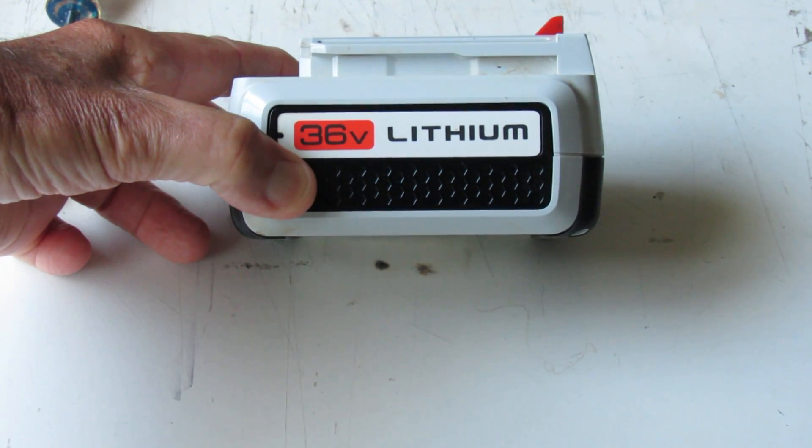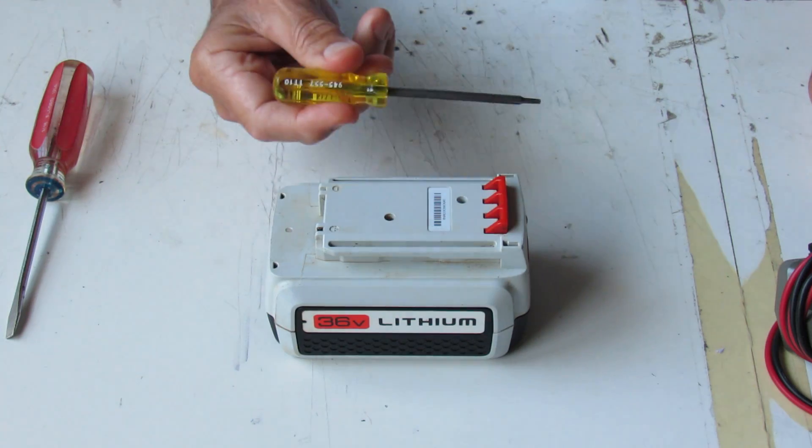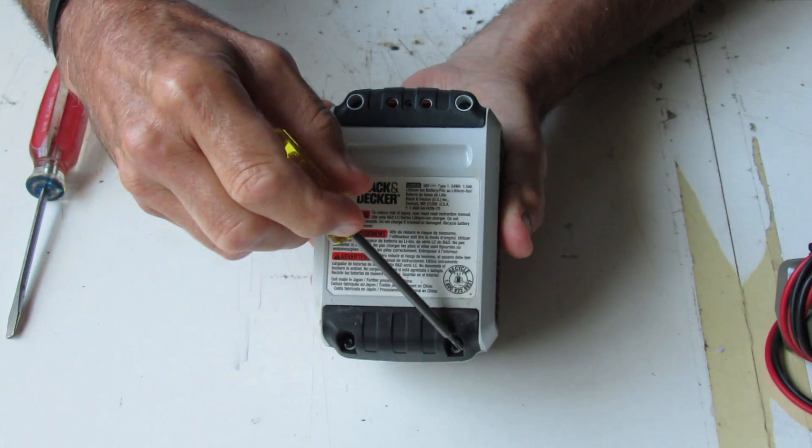A friend of mine just dropped off this 36 volt lithium ion battery from a Black & Decker weed eater, which I've reviewed on my channel. This unit appears to be dead, so I'm going to pull it apart and see if it's salvageable.